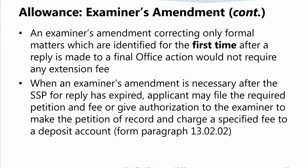When authorization to make a petition for an extension of time is given to you, the authorization must be given before the extended period of time expires. The authorization must be made of record in an examiner's amendment by indicating the name of the person making the authorization, when the authorization was given, the deposit account number to be charged, the length of the extension requested, and the amount of the fee to be charged to the deposit account. You may use Form Paragraph 13.02.02.